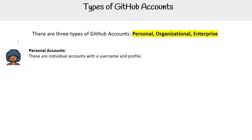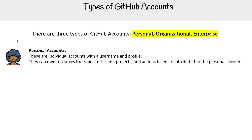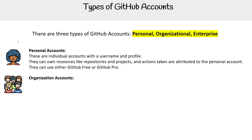For personal accounts, these are individual accounts with a username and profile. They can own resources like repos, projects, and actions, and actions are taken based on the personal account. They can either be GitHub Free or GitHub Pro, which we will definitely describe in this section of the course.